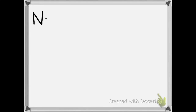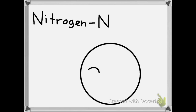I will now show how to draw a nitrogen atom, also known as N. The atomic number is 7, which I will put in the nucleus as 7 protons.